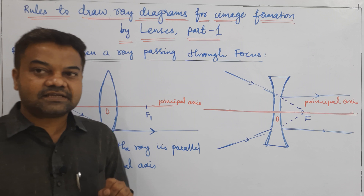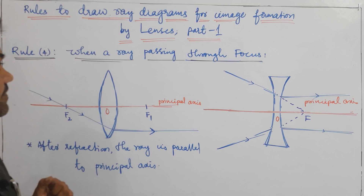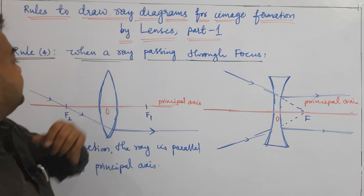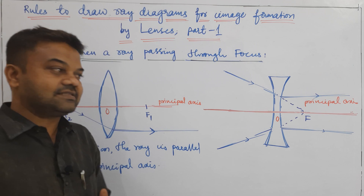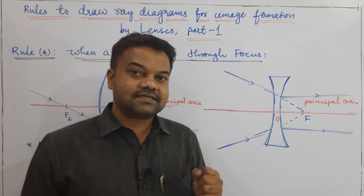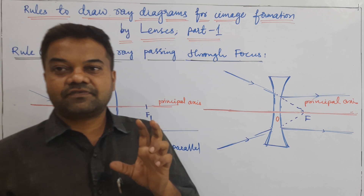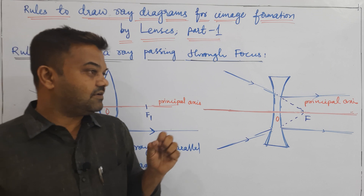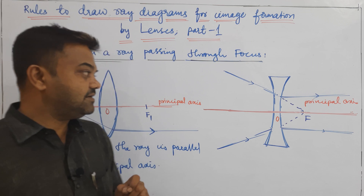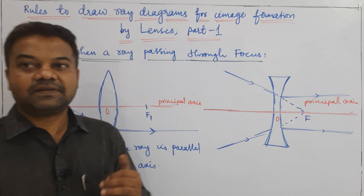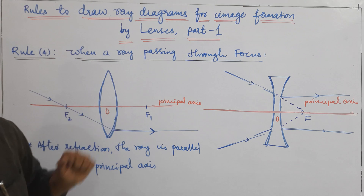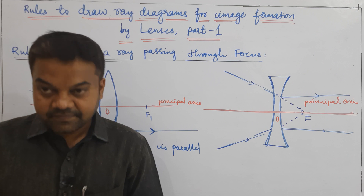These are the four ray diagrams we have to clearly observe. Almost we have six cases to discuss. First we have to know what is a real image and a virtual image — these two images we will discuss in the next class. Thank you.